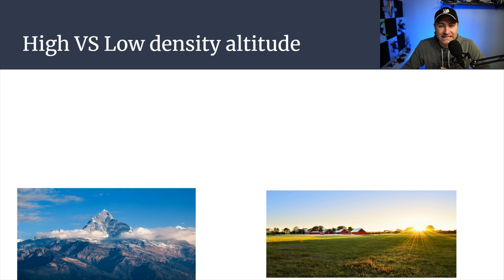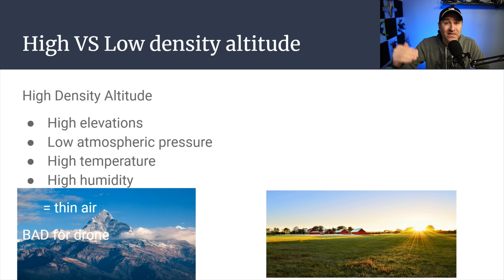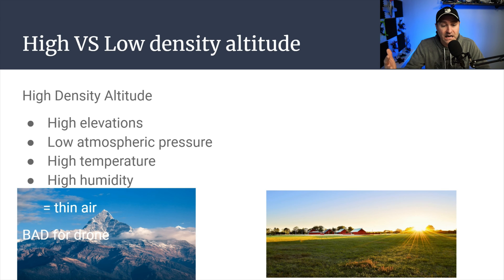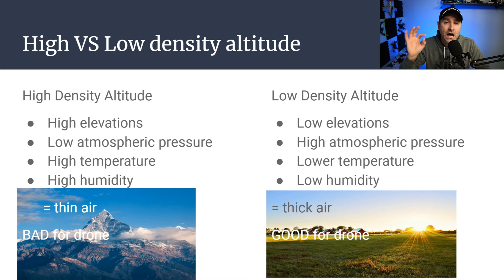There are always questions about high and low density altitude. If you're not a pilot, this tends to be confusing. Think of high density altitude as high altitude — low atmospheric pressure, thin air. If you've been in the mountains, it's harder to breathe. High temperature and high humidity can create those conditions. Thin air is not good for your drone. Low density altitude means low altitude — high atmospheric pressure, lower temperature and lower humidity. The air is thicker and it's more efficient and easier for your drone to fly. That is good.